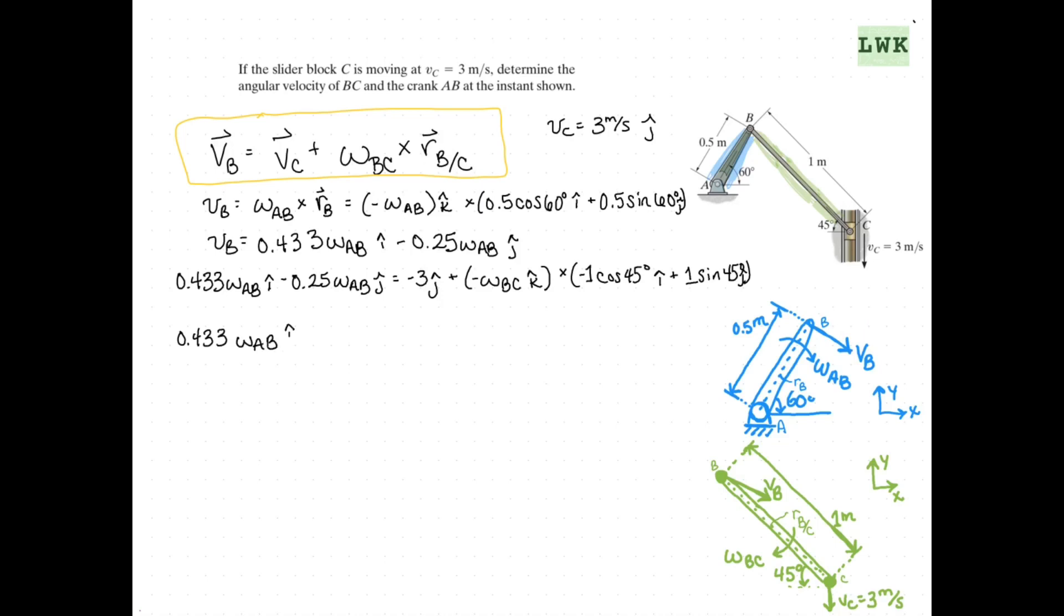So that is going to complete our vector relative velocity equation. We can simplify this one step further, and that will allow us to start solving for these angular velocities. If we equate our I components, we're going to say 0.433 omega AB equals 0.707 omega BC.